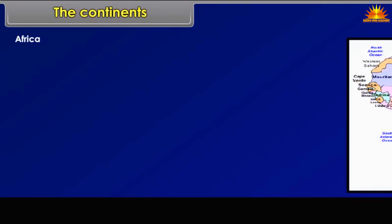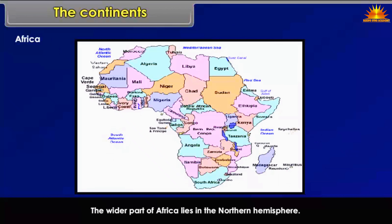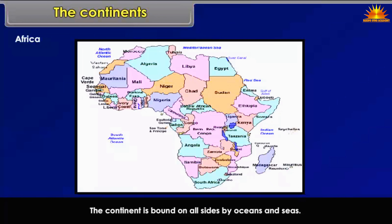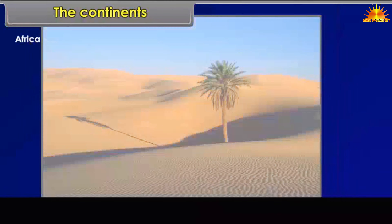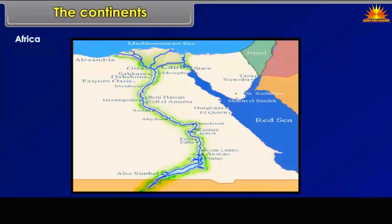Africa is the second largest continent after Asia. The equator runs almost through the middle of this continent, and the wider part of Africa lies in the Northern Hemisphere. It is the only continent through which both the Tropic of Cancer and the Tropic of Capricorn pass. The continent is bounded on all sides by oceans and seas. The largest hot desert, the Sahara Desert, and the world's longest river, the Nile, are both situated in Africa.